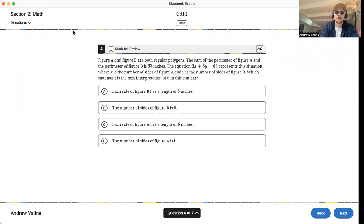Next question. Figure A and B are both regular polygons. The word regular means all sides have the same length. Key word there. The sum of the perimeter of figure A and the perimeter of figure B is 63. The equation 3x plus 6y equals 63 represents this situation where x is the number of sides of figure A and y is the number of sides of figure B. Which statement is the best interpretation of the 6?